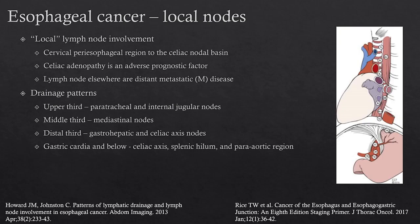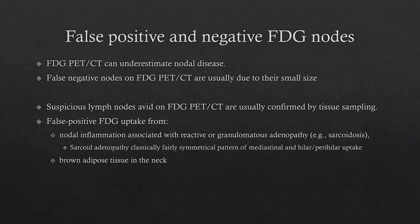The drainage patterns: the upper third of the esophagus typically drains to the paratracheal and internal jugular nodes; the middle third to the mediastinal nodes; and the distal third to the gastro-hepatic and celiac nodes. Activity in the celiac axis, splenic hilum, and paraaortic region can be seen with gastric cardia involvement. FDG can underestimate the extent of nodal metastases, usually if they're small. If you see an FDG-avid node and wonder if it's metastasis, tissue sampling is a good idea.